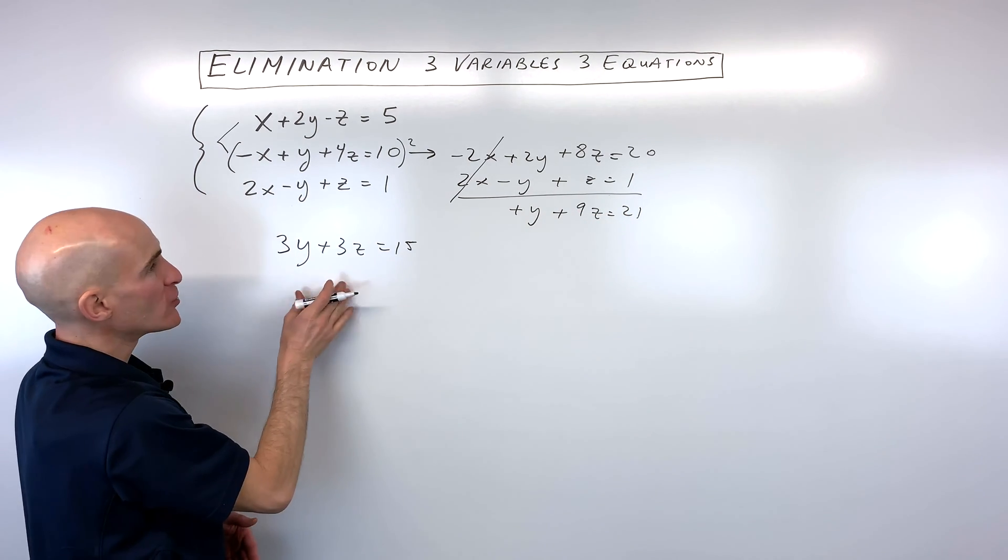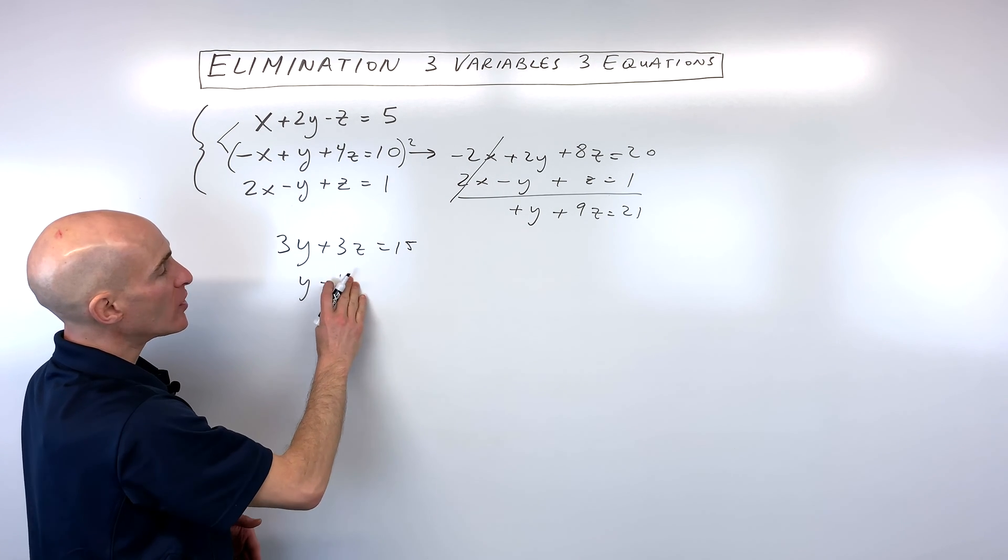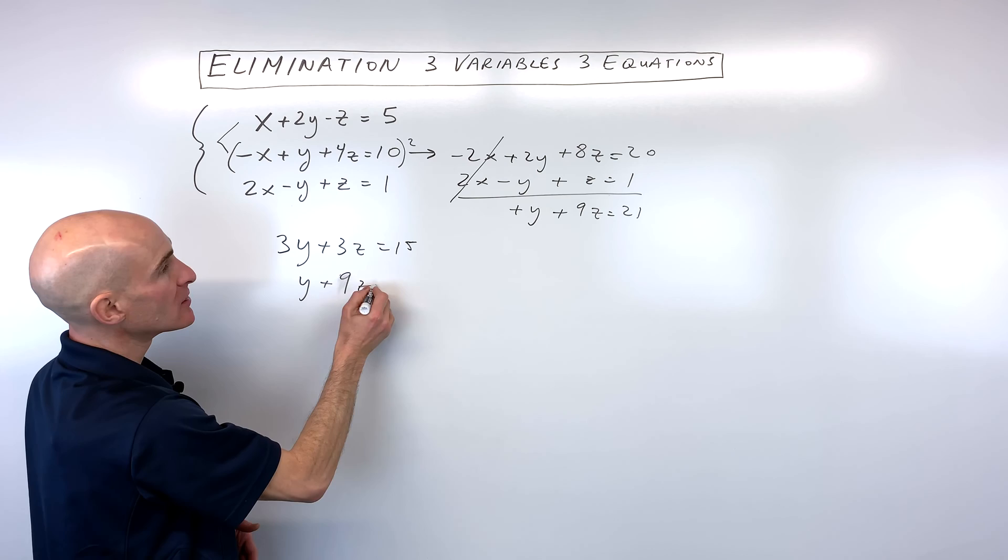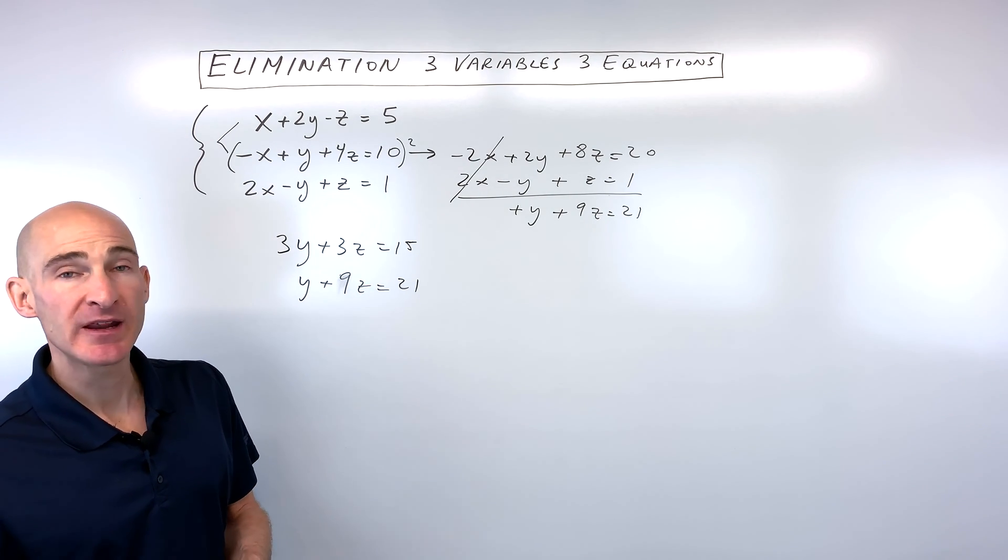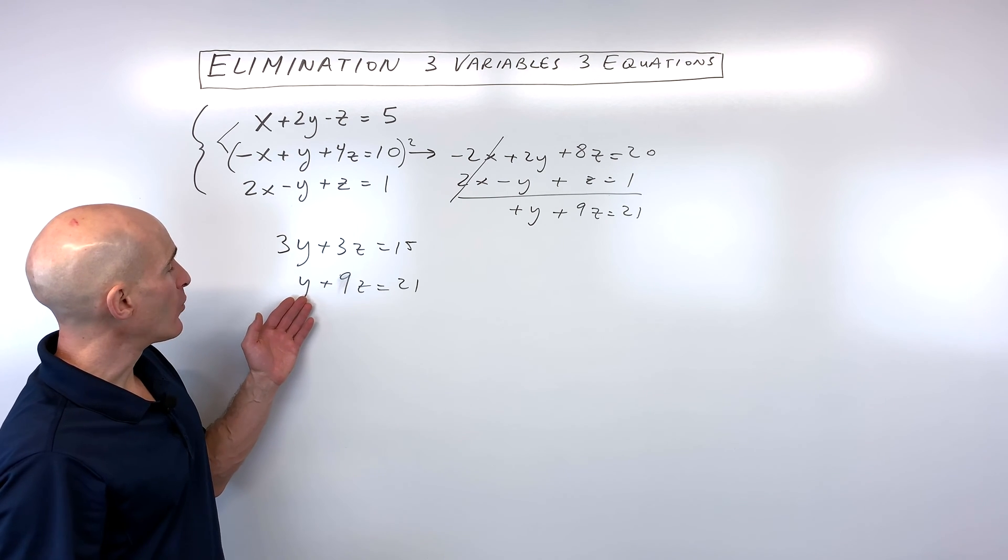So what I'm going to do now is bring this equation over here. And now we're down to a system of two equations with two variables. So all we have to do now is pick a variable to eliminate, either the y's or the z's. So in this case, I'm going to eliminate the y's.